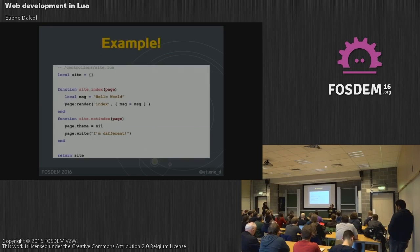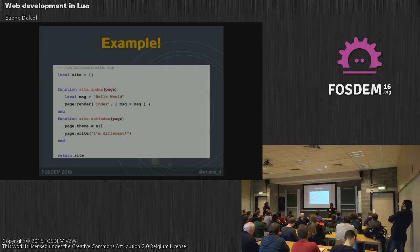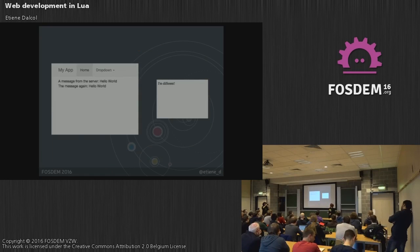I'm going to give you an example of what a controller in Sailor looks like. A controller in Sailor is a Lua module, meaning it is a table with functions indexed to it, and this table is returned at the end. Each action of the controller is a method of this module. In my application, I have a controller called site.lua. If I access my application address slash site or slash site slash index, it will run the index function. If I access slash site slash something-else, it will run that other function.